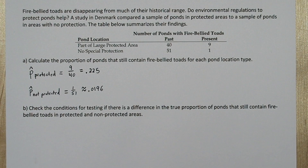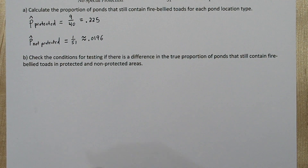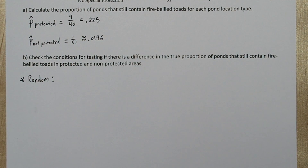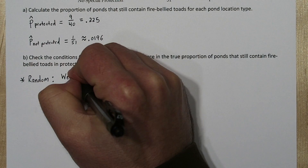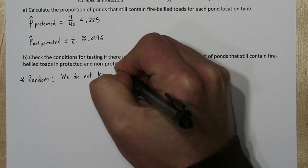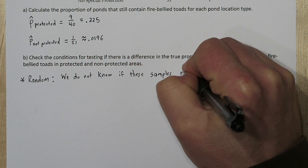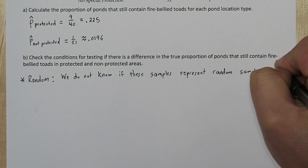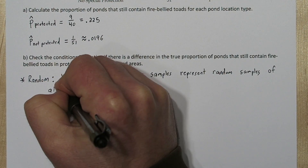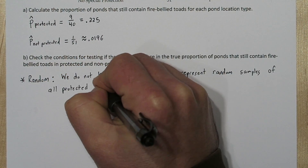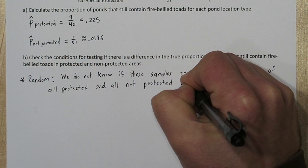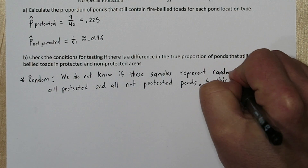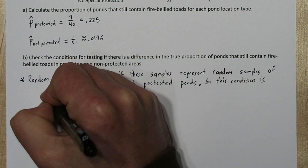There are three conditions we need to check. The first is the random condition. Now in the stem of the problem, it says they're samples, but it doesn't say they're random samples. So we don't know if the samples represent a random sample of all protected ponds and of all non-protected ponds. So this condition is not met.